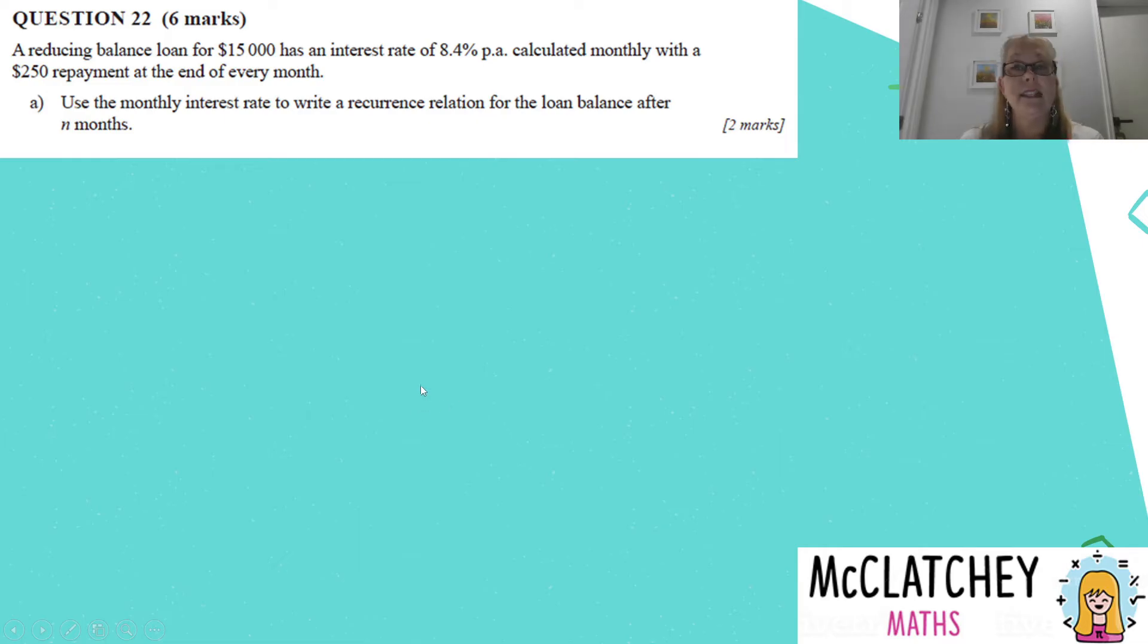Question 22, worth 6 marks. This one is a doozy. So stay with me on this one. First part A is worth two marks. For a reducing balance loan of $15,000, it has an interest rate of 8.4% per annum calculated monthly with a $250 repayment at the end of every month. We need to use the monthly interest rate. So we've got a yearly rate here. We need to change that to a monthly rate. 0.084, which is 8.4 divided by 100, divided by 12 to get a monthly rate. And our monthly rate is 0.007. And we've correctly calculated that, we get our first of the two marks.